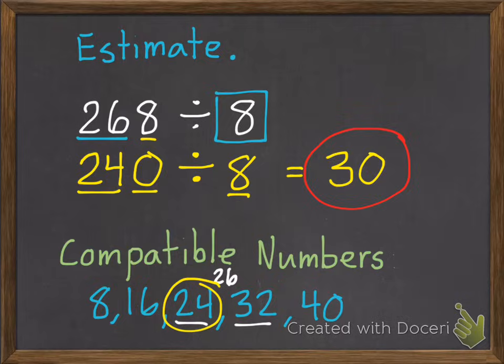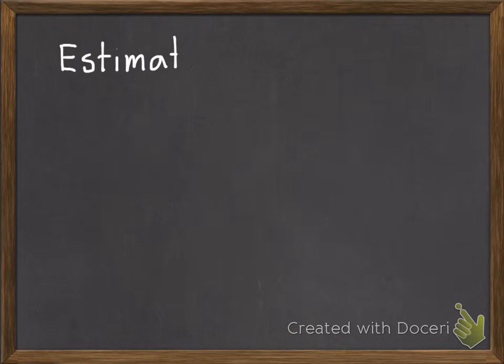Here's your first practice problem. You're going to estimate 127 divided by 4 using compatible numbers. So first thing, find all the compatible numbers or the multiples of 4, and then find your answer. Go ahead and pause.